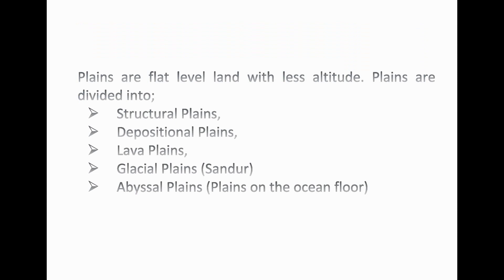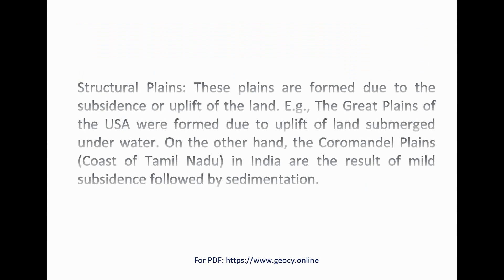Plains are flat-level land with less altitude. Plains are divided into structural plains, depositional plains, lava plains, glacial plains, and abyssal plains. Structural plains are formed due to the subsidence or uplift of the land. For example, the Great Plains of the USA were formed due to the uplift of land submerged underwater. The Coromandel Plains in India are the result of mild subsidence followed by sedimentation.